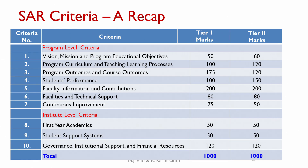For example, for Criterion 5, the marks are 200 for both Tier 1 and Tier 2 Institutes. However, for Criterion 1, 50 marks are allocated for a Tier 1 Institute while for a Tier 2 Institute it is 60 marks. So there can be some differences between a Tier 1 Institute and a Tier 2 Institute.